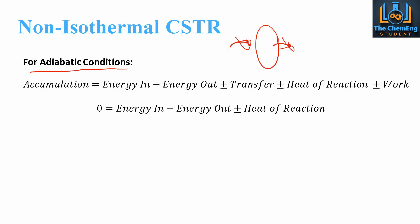Under steady state, accumulation is zero. We can also neglect the work term because work is negligible compared to the other terms. There is no transfer since there is no heat or mass transfer to or from the system. When we talk about energy in and energy out, we are referring to enthalpy.